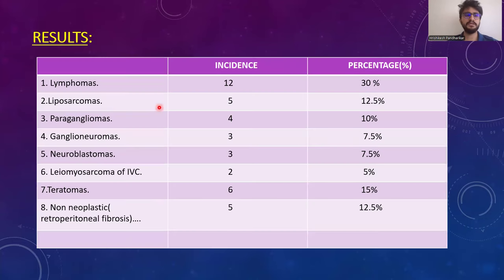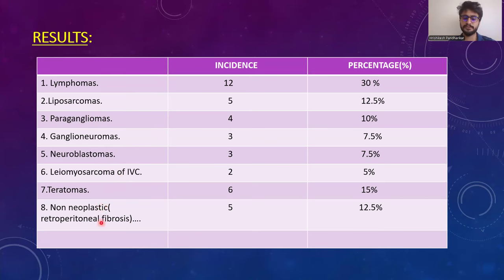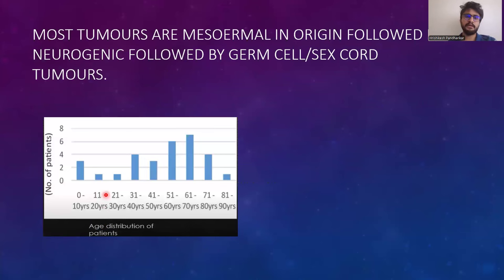The study results show that lymphomas are the most common, accounting for 30%, followed by liposarcomas, paragangliomas, ganglioneuromas, neuroblastomas, leiomyosarcoma of the IVC, teratomas, and non-neoplastic retroperitoneal fibrosis. Most tumors are of mesodermal origin, followed by neurogenic and then germ cell sex cord tumors. The age distribution peaks in the 60 to 70 years age group.